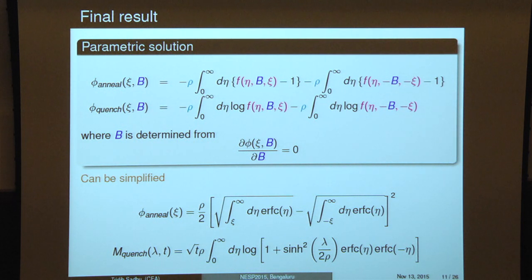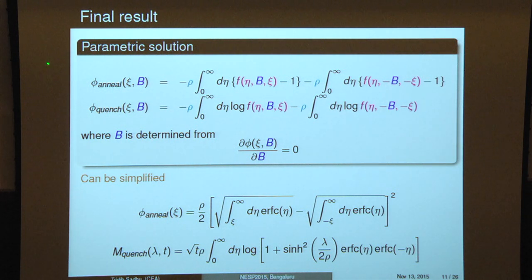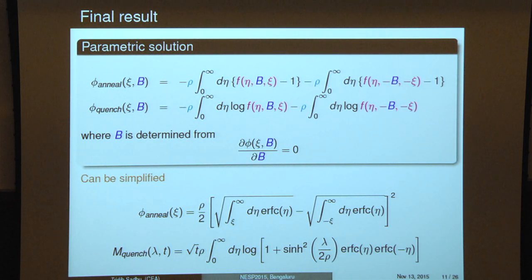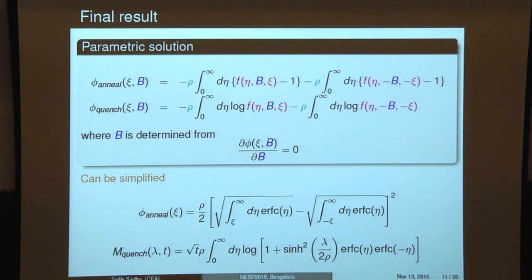Although the result is in parametric form, one can simplify further. For the annealed case, one can derive an explicit form, which Sanjeev showed in his talk. For the quenched case, there is no explicit form for the large deviation function, but if you look at the cumulant generating function, it has an explicit formula.